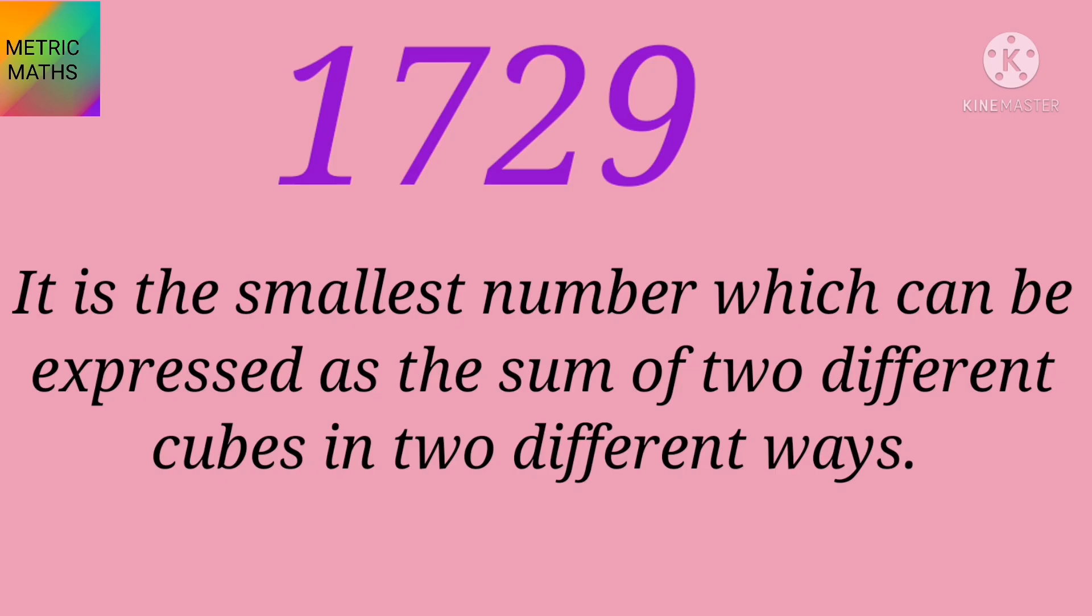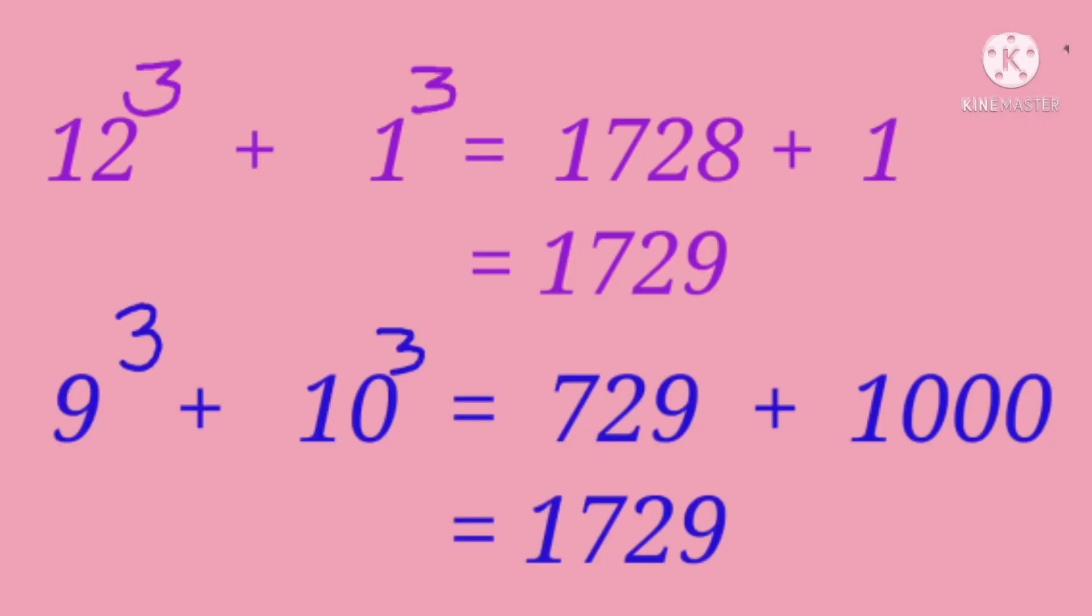1729 is the smallest number which can be expressed as the sum of two different cubes in two different ways. The two different cubes are 12 cube and 1 cube, and 9 cube and 10 cube. These are the two different cubes in two different ways.